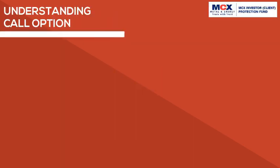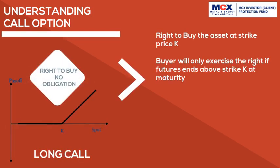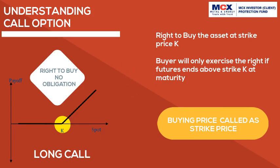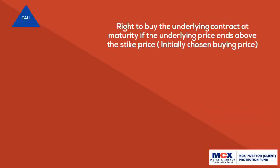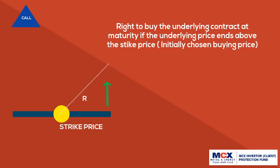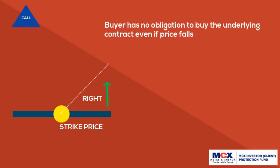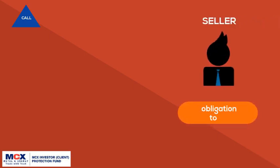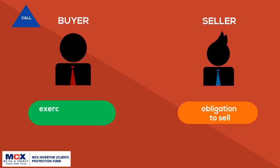A long call option is the right to buy the underlying commodity futures at a fixed price K, known as the strike price. The buyer exercises the right if the price of the underlying ends above the strike price at expiry. The buyer of a call option has the right to buy the underlying contract at maturity if the underlying price ends above the strike price, but has no obligation to buy if the price falls. The seller of a call option is obligated to sell the underlying if the call buyer exercises the right; if the call buyer does not exercise the right, the seller is not obligated to sell.